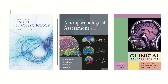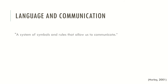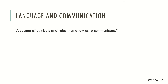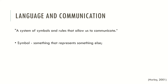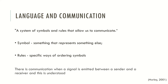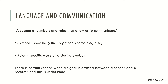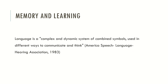Language may be described as a system of symbols and rules that allow us to communicate. A symbol is something that represents something else, just like a flag or a letter which represents a sound. Language has rules, which are specific ways of ordering symbols. There is communication when a signal is emitted between a sender and a receiver and this signal is understood. Language is a complex and dynamic system of combined symbols used in different ways to communicate and think — this is the standard definition of the American Speech-Language-Hearing Association.